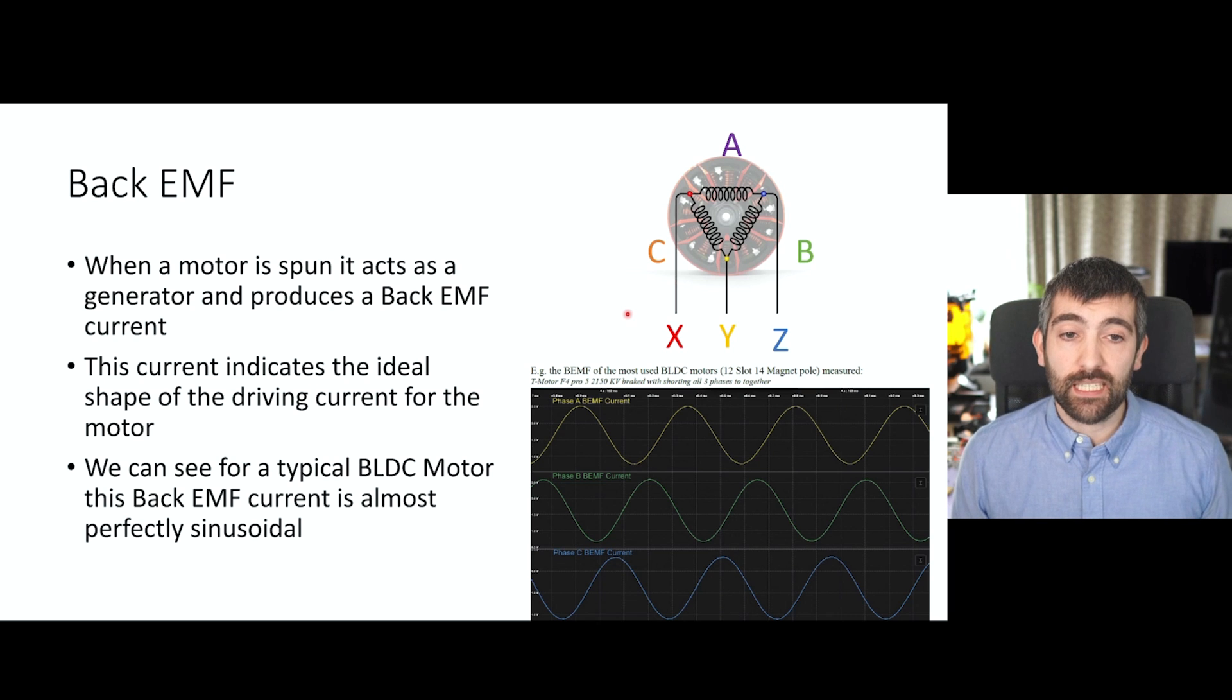When we spin a brushless DC motor, it acts as a generator and it produces a back EMF current on the phases. Because of the symmetry between the motor being spun and driving the motor to spin, the back EMF current actually indicates the ideal shape of the driving current for that particular motor. So this graph was taken by Felix at FetTech and this is for a T-Motor F40 Pro, and you can see that the back EMF current on each of the phases looks very, very close to a sinusoid, nearly a perfect sinusoid. And that means that the ideal driving current for this motor is also nearly perfectly sinusoidal. And if we drive it with that ideal current, we'll get the most performance, the most torque and power, and we'll also get the best possible efficiency from the motor.